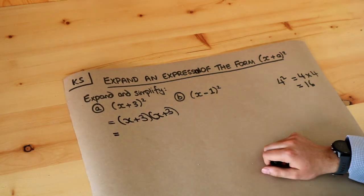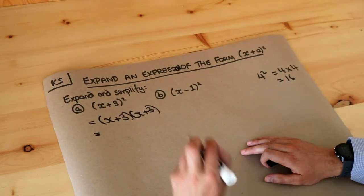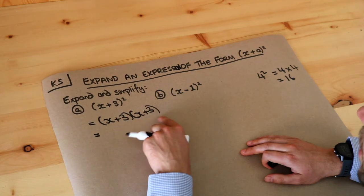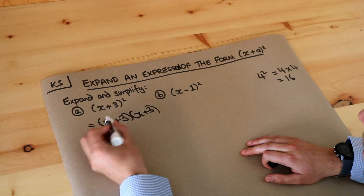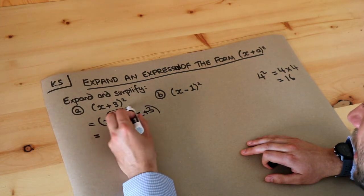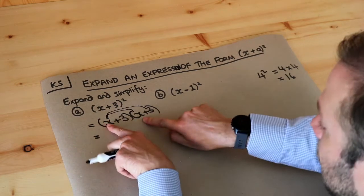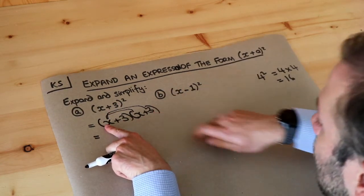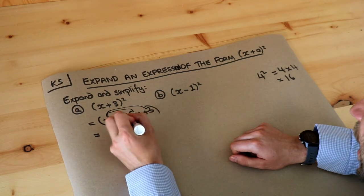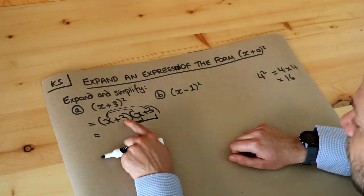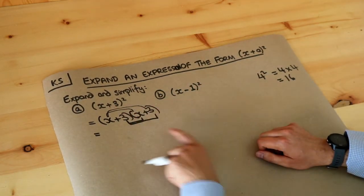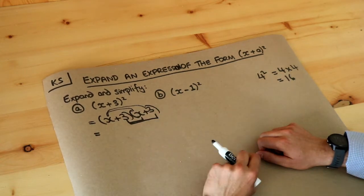In the previous video we saw how to expand two brackets. We do each thing in the first bracket multiplied by each thing in the second bracket. The x gets multiplied by each thing in the second bracket, and then the second thing in the first bracket gets multiplied by each thing in the second bracket. So you should have four different combinations when there are two things in each bracket.